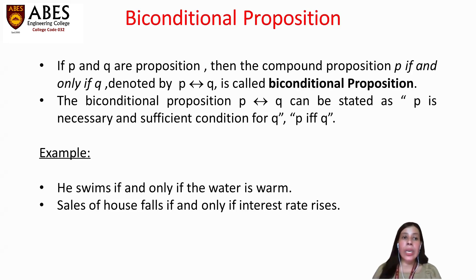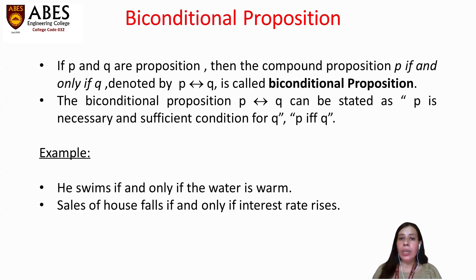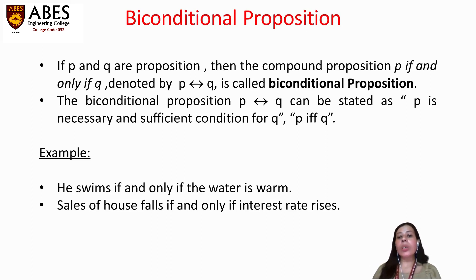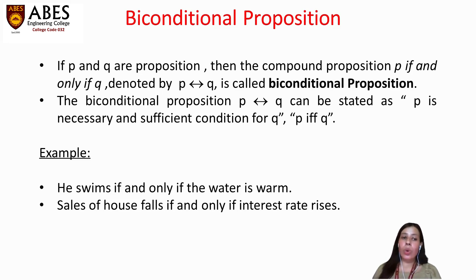Next is the biconditional proposition. If P and Q are propositions, then the compound proposition 'P if and only if Q,' denoted by P ↔ Q, is called the biconditional proposition. It can be stated as 'P is a necessary and sufficient condition for Q.' For example, 'He swims if and only if the water is warm' — both conditions must hold. Another example: 'Sale of houses fall if and only if interest rates are high' — this condition is necessary and sufficient.